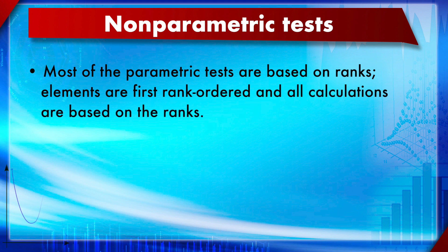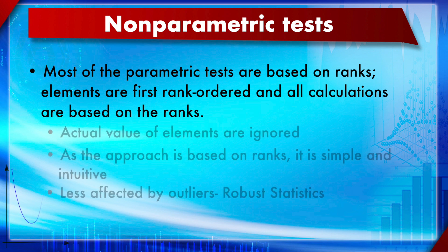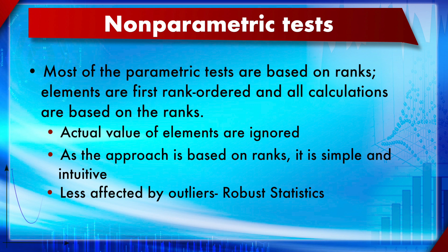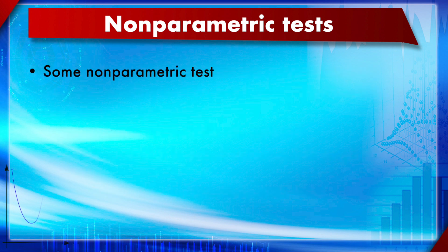The initial step is to arrange data in ascending order and then assign ranks, including half ranks — a concept learned when discussing percentiles. Elements are first rank-ordered and all calculations are based on the rank, not on the actual value. This makes non-parametric methods highly robust statistics, because outliers won't much contribute since they are less affected by extreme values.